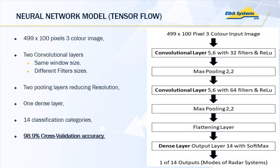That is then subjected to a neural network, which is a fairly simple neural network, because there are no complexities of multi-resolution — we know the digitization rates, we know the times, we know the gains. We are not dealing with images at different zooms or different orientations. It is a much simpler situation, resulting in a simpler model: two convolutional layers, a flattening layer, and a dense layer. That achieves a cross-validation accuracy of 98.9% across the 14 classifications.